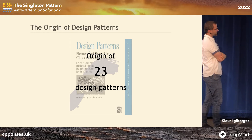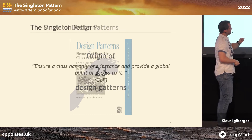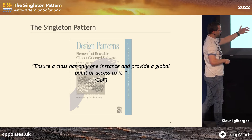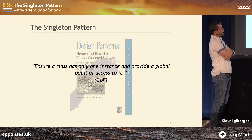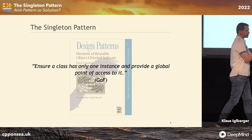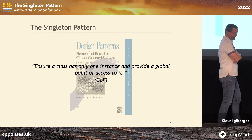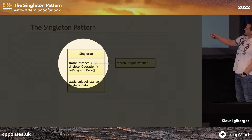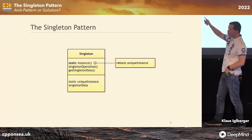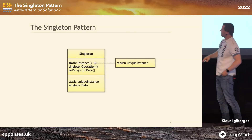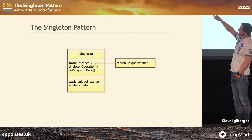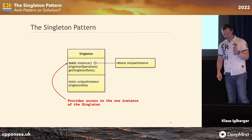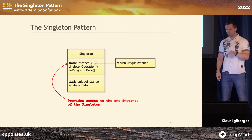Pretty much every design pattern used is described in that book. Let's take a look at singleton. This is the intent of the singleton pattern according to the Gang of Four, the authors of this book: 'Ensure a class has only one instance and provide a global point of access to it.' This is what the pattern is supposed to do. And this is the UML diagram they give you — an instance function that allows you to access the one and truly only instance that exists, usually realized by some static inside the class.